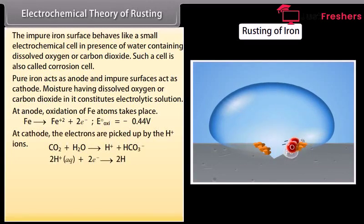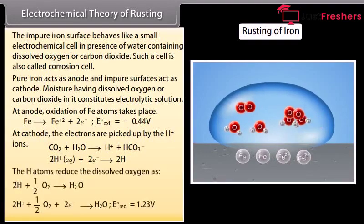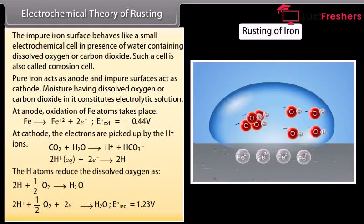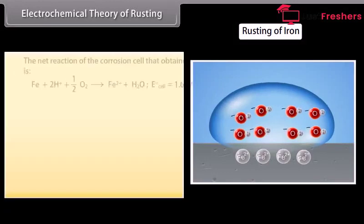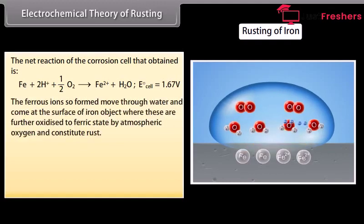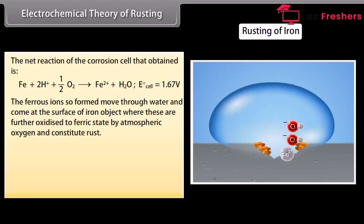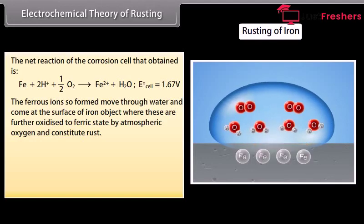At cathode, the electrons are picked up by H plus ions. The hydrogen atoms reduce the dissolved oxygen. The ferrous ions so formed move through water and come at the surface of iron object where these are further oxidized to ferric state by atmospheric oxygen and constitute rust.